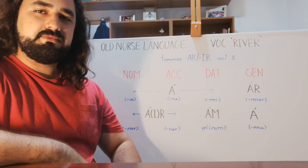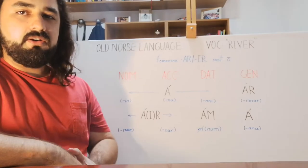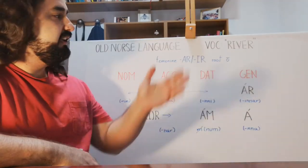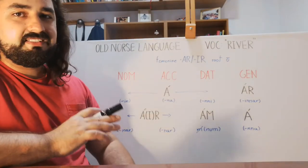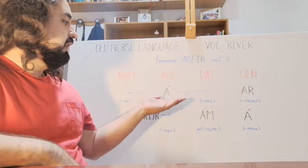As you can see in this whiteboard, we will see in this lesson a bit of the vocabulary of the Old Norse, specifically the word river, or at least one of the words for river, which takes the base form of á.